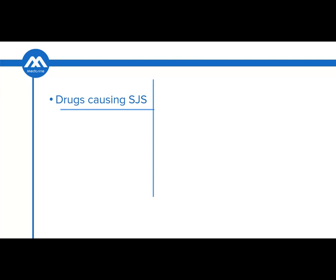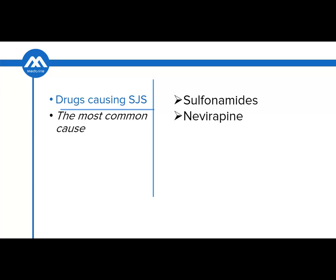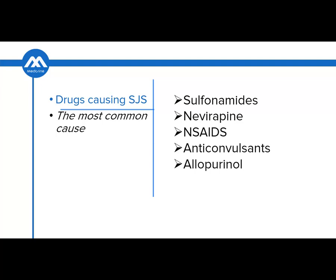The most common drugs associated with Steven Johnson syndrome are sulfonamides like sulfamethoxazole-trimethoprim, nevirapine which is an antiretroviral drug, non-steroidal anti-inflammatory drugs, anticonvulsants that are used to treat seizures and convulsions, allopurinol which is a drug used in the treatment of gout, lamotrigine and alogliptin. Steven Johnson syndrome is a side effect of these medications.